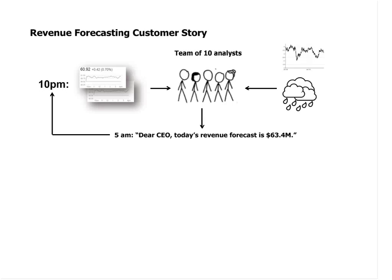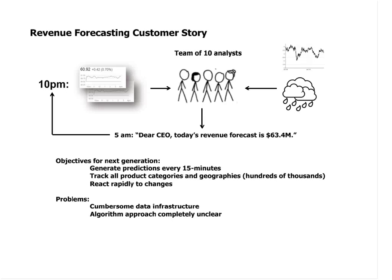But they wanted to take this one step further. Instead of generating one number per day, they wanted to generate predictions every 15 minutes. Instead of doing a single global revenue prediction, they wanted to track all of their product categories and in all of their important geographies — because there are important local effects they wanted to capitalize on. This would allow them to react rapidly to changes in their business. But this required going from one prediction every day to hundreds of thousands of predictions a day.